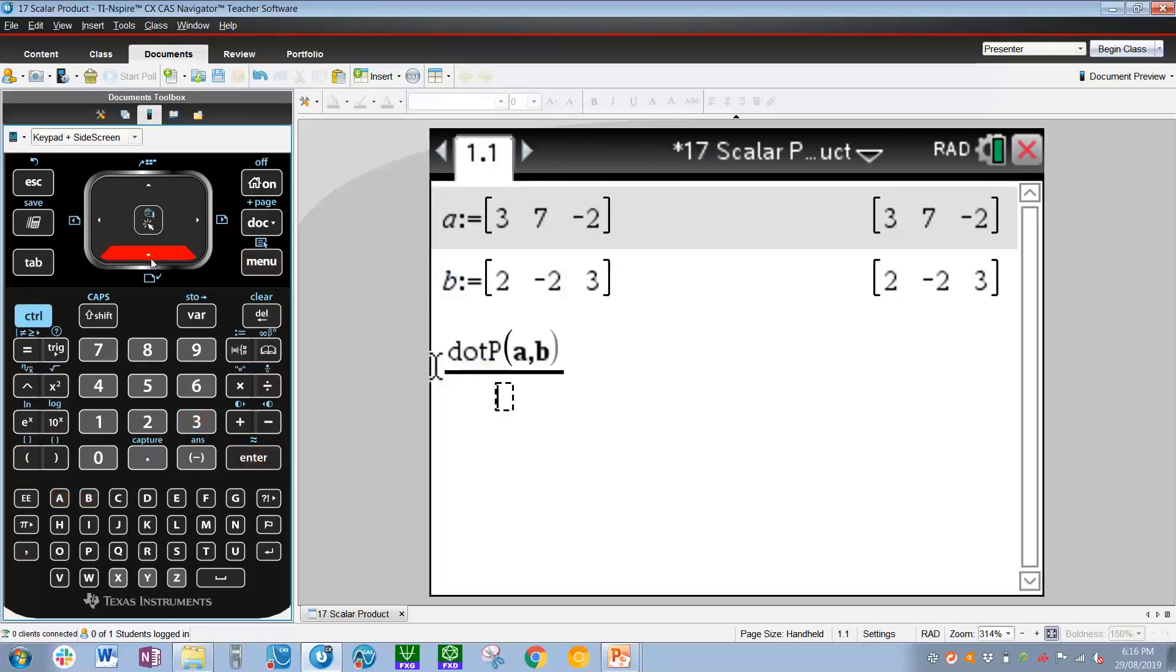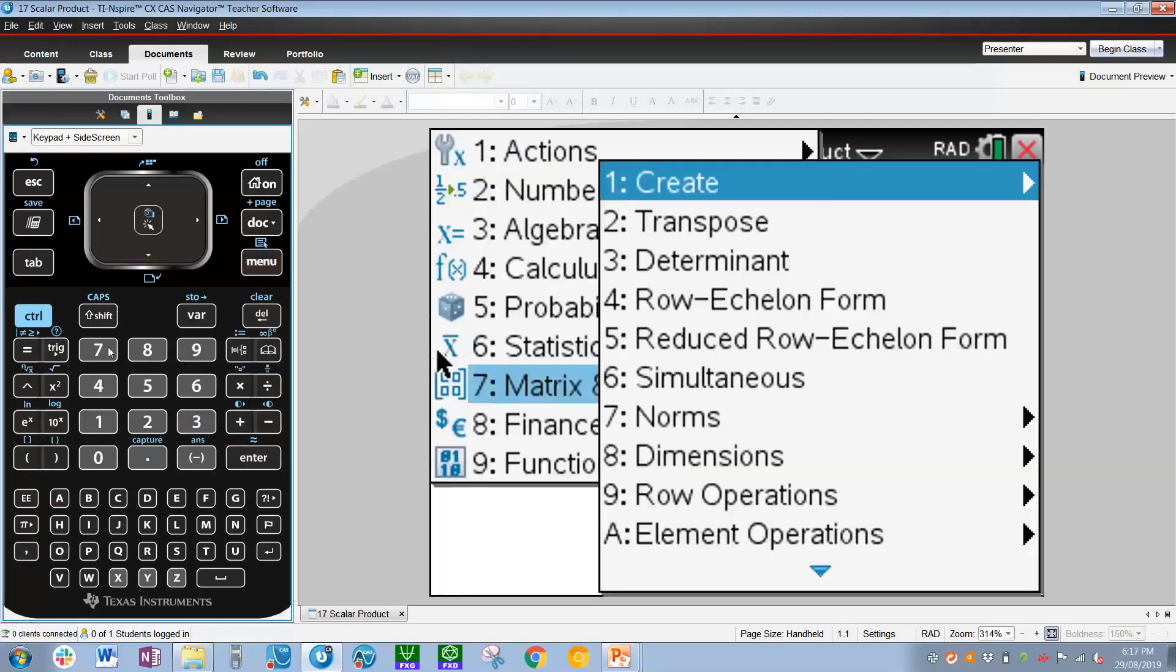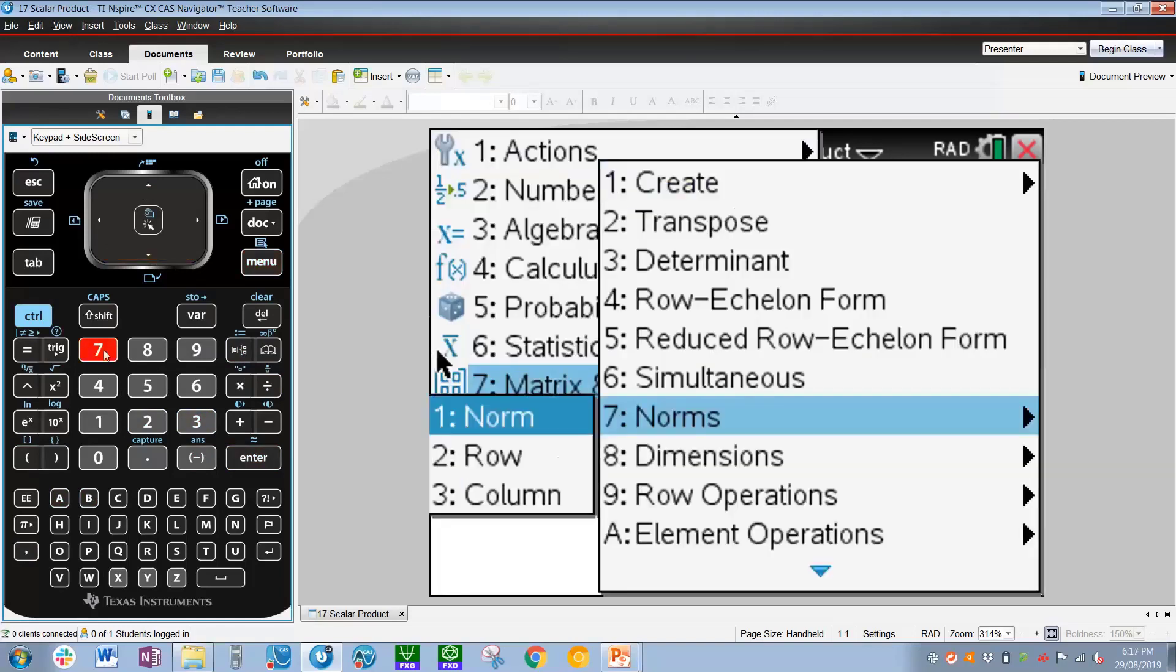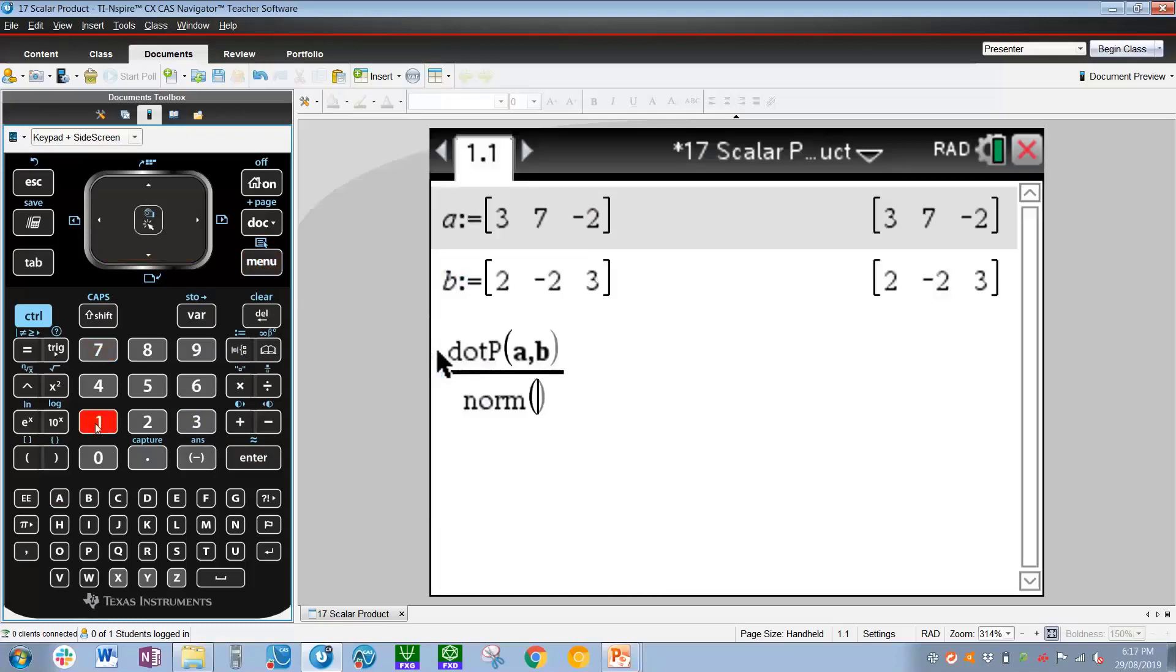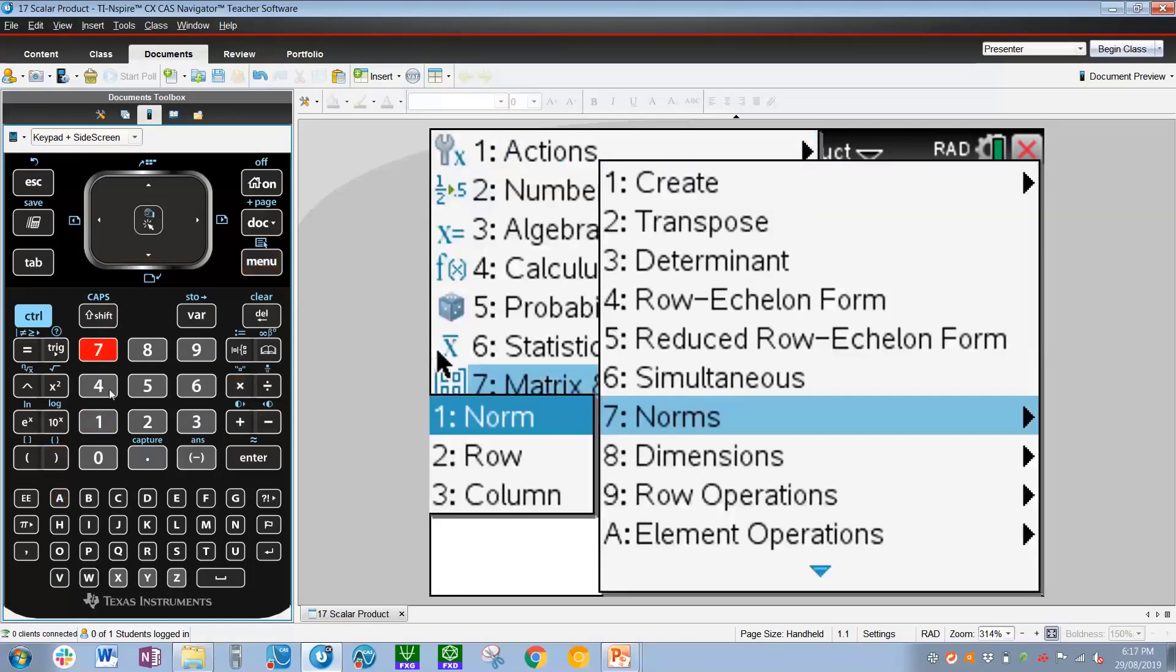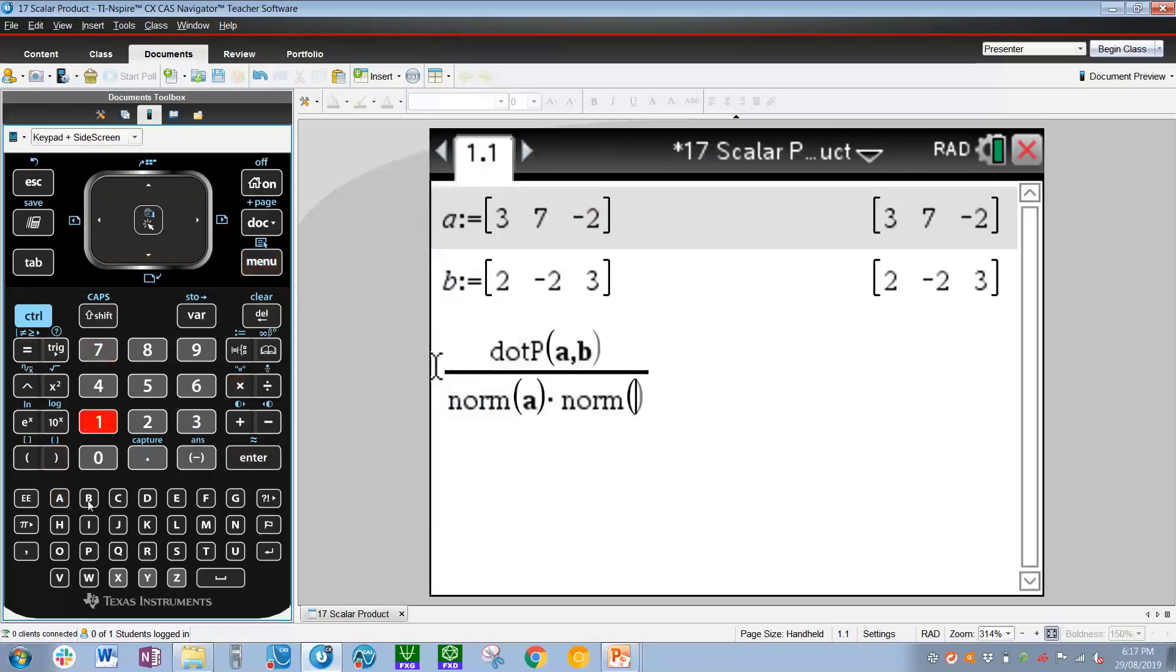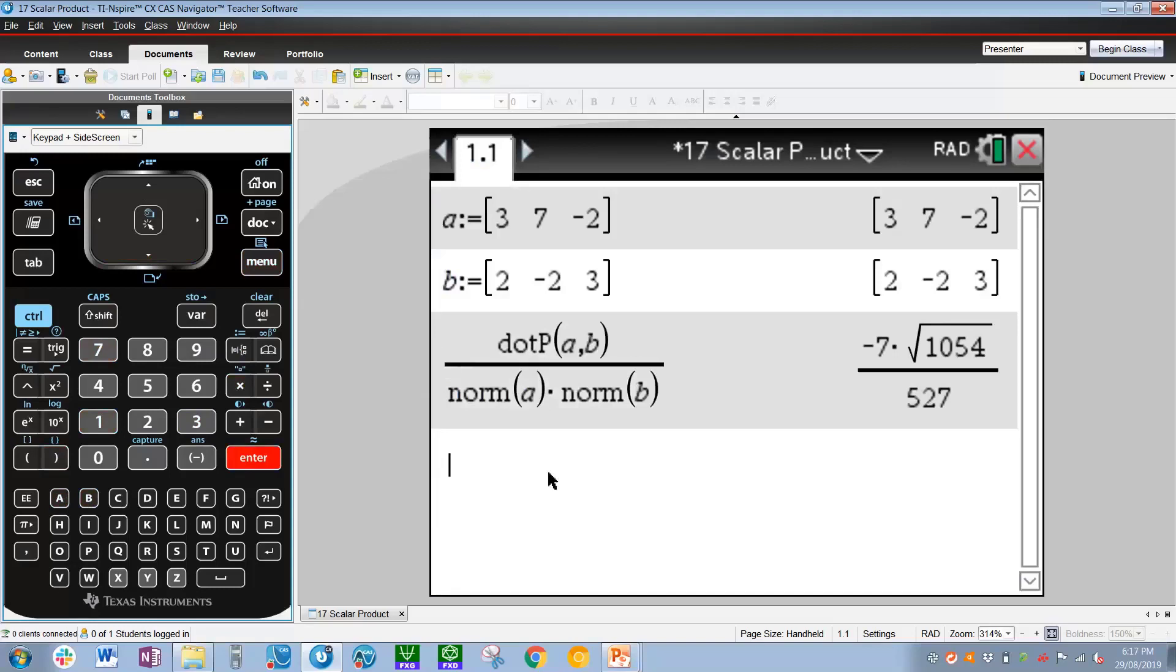Divided by the product of the magnitudes. Now, the magnitude of a vector can be gotten via something called norm. To get norm, we have to press menu 7 for matrix and vectors, 7 for norms, and 1 for norm. We simply have to get norm(a), that's the magnitude of vector a, multiplied by the magnitude of vector b, which is menu 7, 7, 1, norm of b, press enter, and there we go. So that is the value of cos(θ).